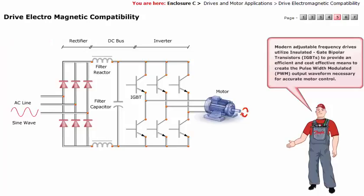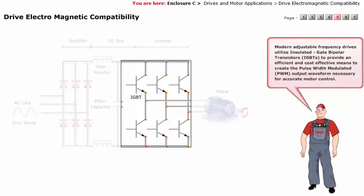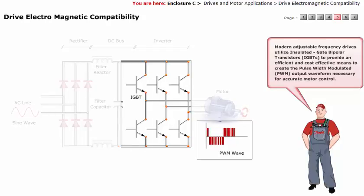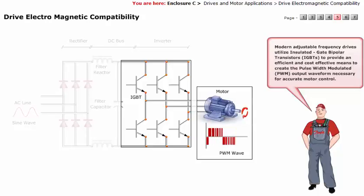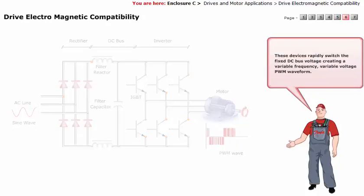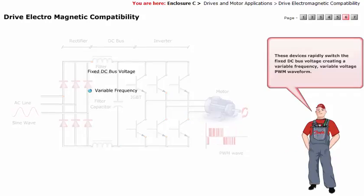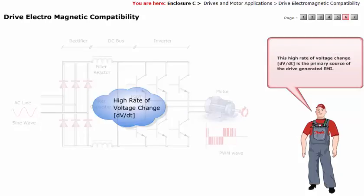Modern adjustable frequency drives utilize insulated gate bipolar transistors (IGBTs) to provide an efficient and cost-effective means to create the pulse width modulated (PWM) output waveform necessary for accurate motor control. These devices rapidly switch the fixed DC bus voltage, creating a variable frequency, variable voltage PWM waveform. This high rate of voltage change (dV/dt) is the primary source of drive-generated EMI.